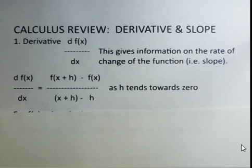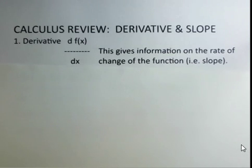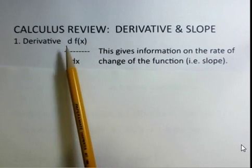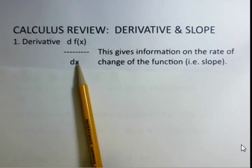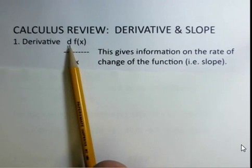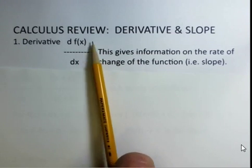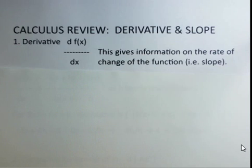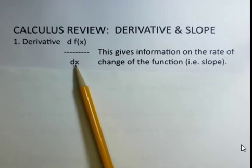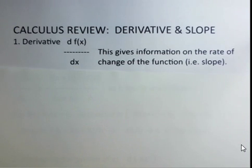In this video, we're reviewing the concept of the derivative and how it provides information on the slope. We have the derivative notation: the derivative of the function f of x with respect to x. This is not a multiplication. The f does not multiply x, the d does not multiply f of x, and the d here does not multiply x. It's a notation — the derivative of the function f of x with respect to x.